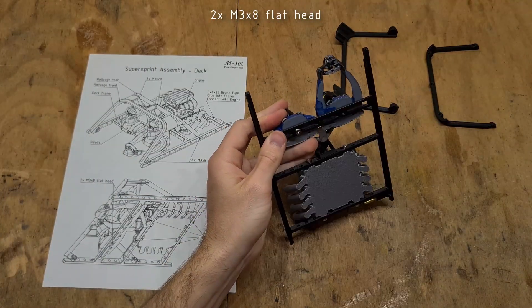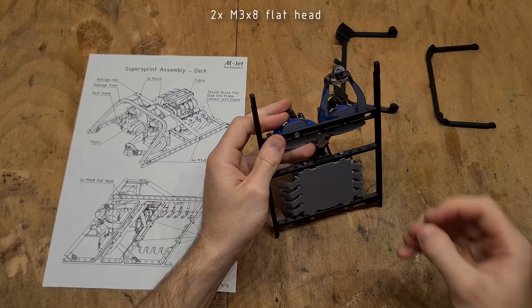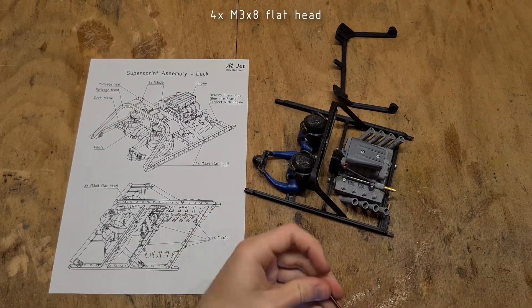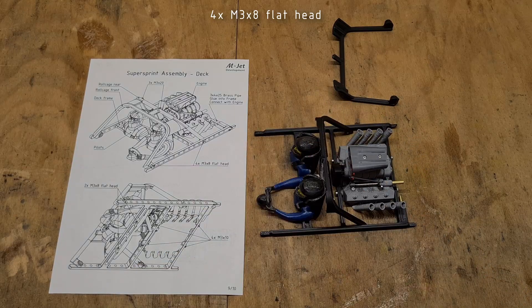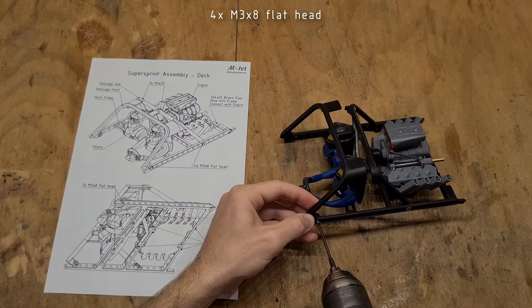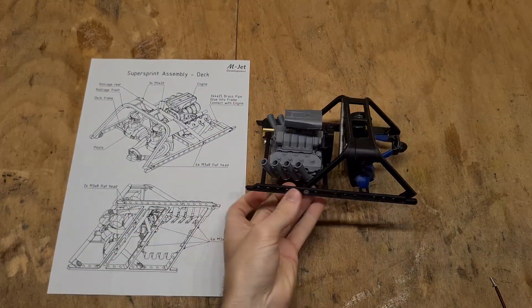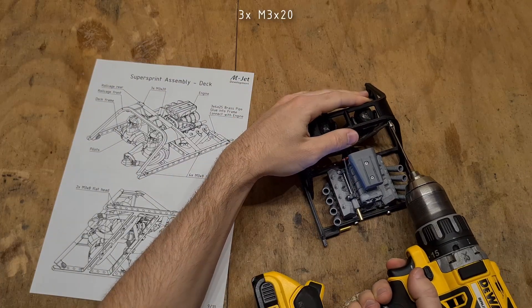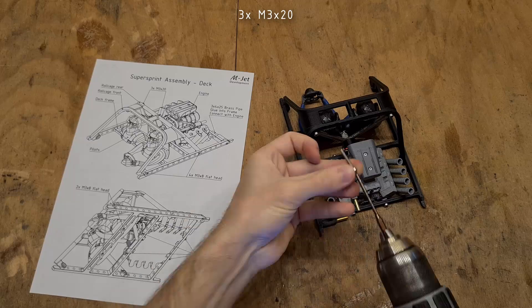Pilots get mounted to the frame using two M3x8s with a flat head. The roll cage gets mounted using four M3x8s with a flat head. And finally everything gets tightened together by using three M3x20.